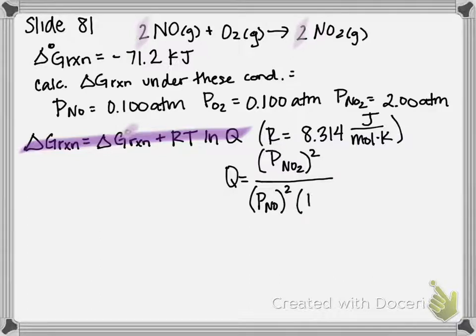Times partial pressure of O2, and that is not squared or anything because I don't have any coefficients in front. So that's our equilibrium expression: products raised to the power of their coefficients over reactants. Now I could plug in all the numbers that I was given.